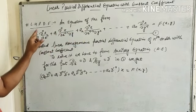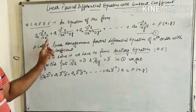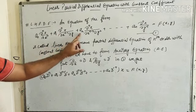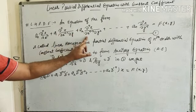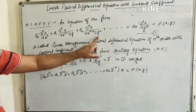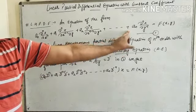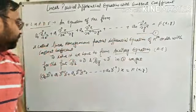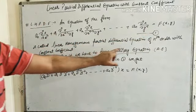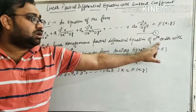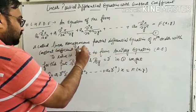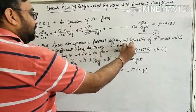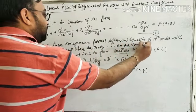An equation of the form a₀ (∂ⁿz/∂xⁿ) + a₁ (∂ⁿz/∂xⁿ⁻¹∂y) + a₂ (∂ⁿz/∂xⁿ⁻²∂y²) + ... + aₙ (∂ⁿz/∂yⁿ) = f(x,y) is called a linear homogeneous partial differential equation of nth order with constant coefficients, where a₀, a₁, a₂, ..., aₙ are constants.